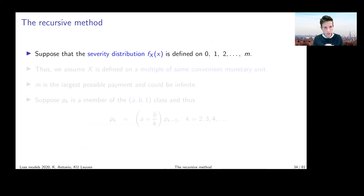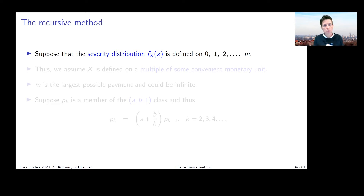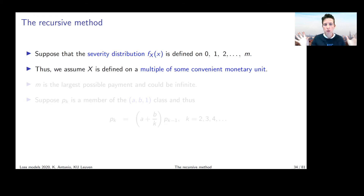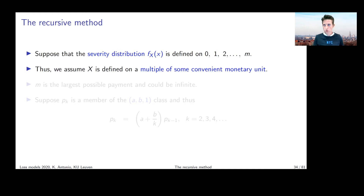Now we're going to see how we can manipulate that idea from Panjer and use it here when we want to use a certain severity distribution in the compound sum, instead of looking exclusively at compound sums where both primary and secondary distributions are discrete. The idea is: suppose your severity distribution of X — the common distribution of the independent X_j's you're adding together — is defined on a certain grid, meaning it's a discrete distribution defined on multiples of some monetary unit, for instance 1,000 or 10,000 euros.